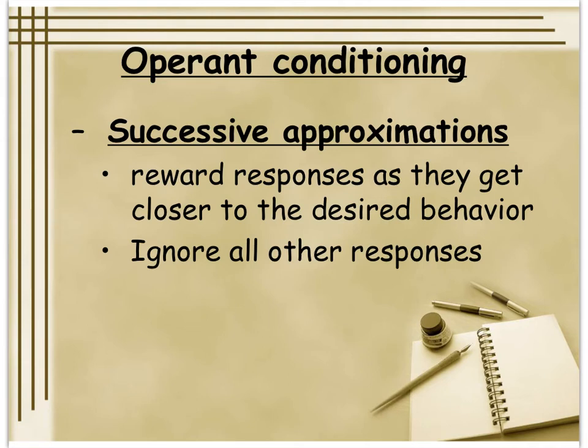When training a puppy to go to the bathroom outside, you first cover the kitchen floor with newspaper; as long as the puppy goes on the newspaper, it gets a treat. If it goes off the newspaper, you just clean it up with no reward. Gradually remove sections of newspaper until there's just one sheet, move it closer and closer to the door, then eventually outside, then remove the newspaper altogether. A key point about timing: if your dog goes to the bathroom outside then comes inside and you give a treat, the dog thinks it's getting a treat for coming inside — so the reinforcement needs to come within 30 seconds of the desired behavior.